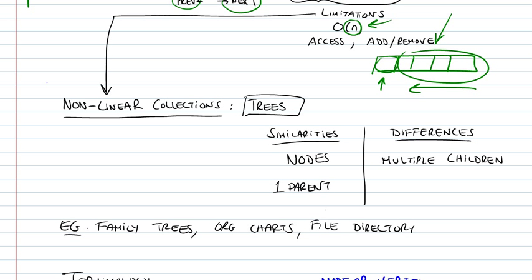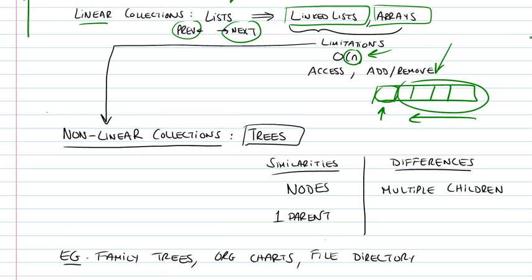To get around these limitations, we come up with a new abstract data type — a non-linear abstract data type for a collection of elements — and we're going to call it trees.